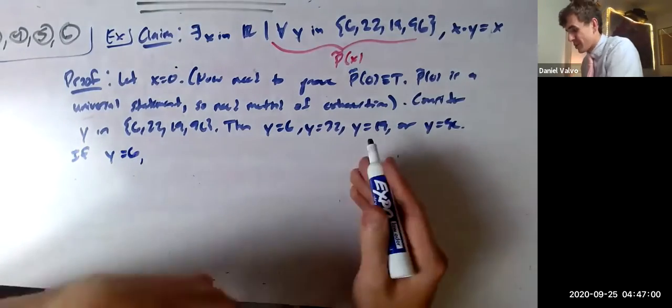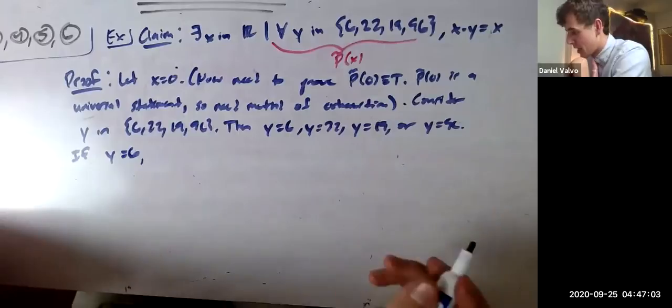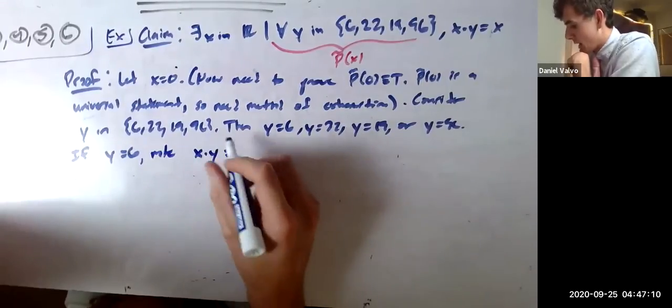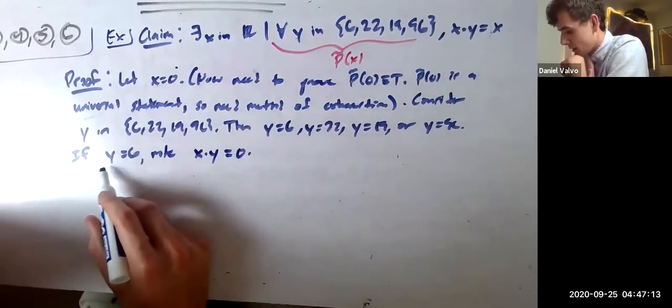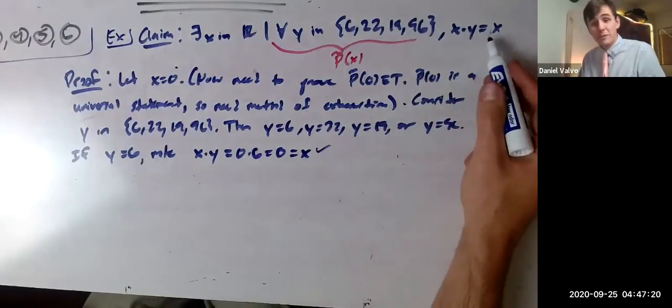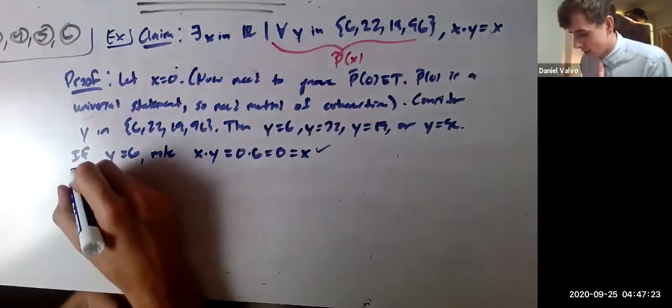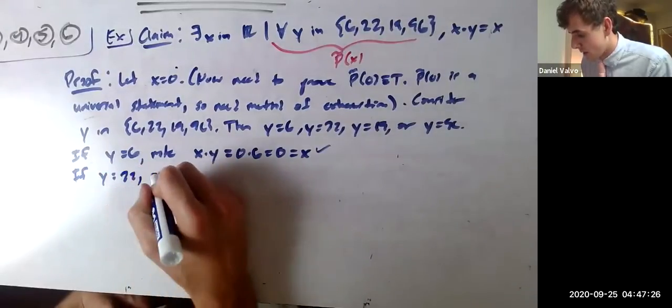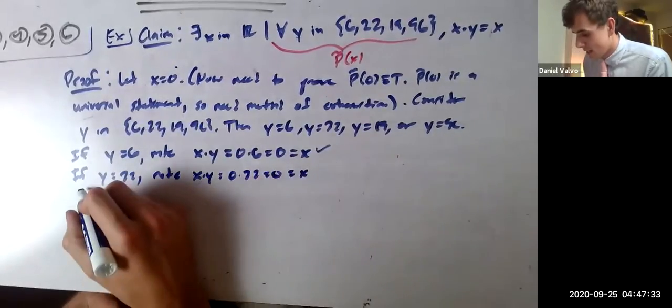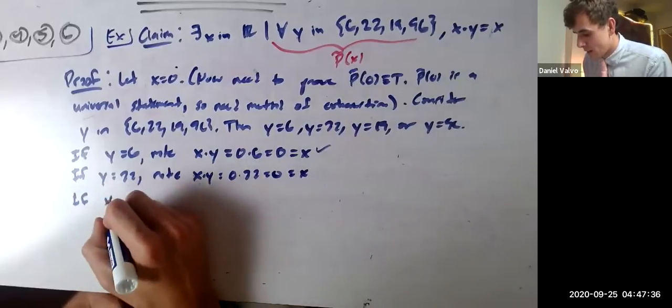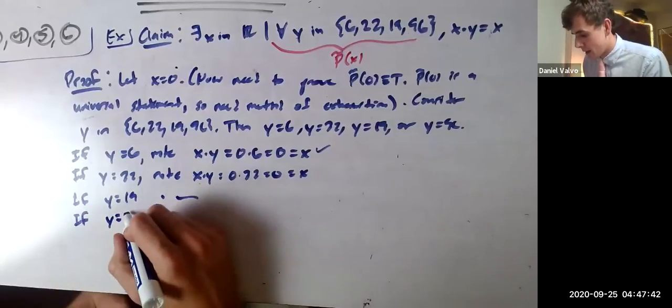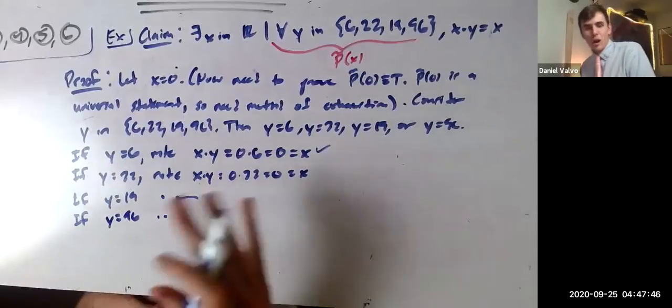If y equals 6, we're just going to prove all the cases. If y equals 6, then note x times y is going to be 0, because x is 0, times 6, which is 0, which equals x. So check, x times y did equal x here. When x equals 0, y equals 6. If y equals 22, and we'll do the same thing for if y equals 19, the same thing for if y equals 96. So you have to write it all out.